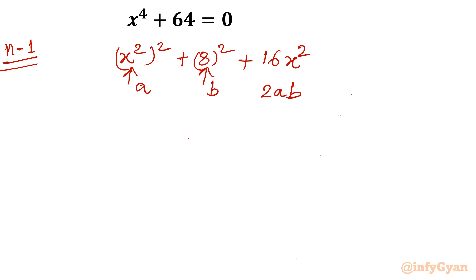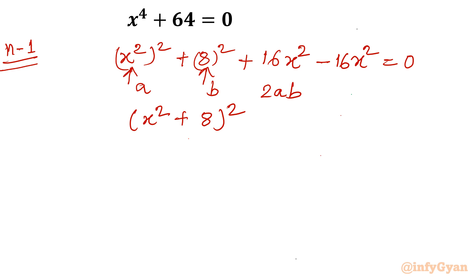Because I have added this term, I have to take it away also so the equation does not change. From the first three terms, I will write a-squared plus b-squared plus 2ab, which is (a + b) whole squared. So I will write (x-squared + 8) whole squared, minus 16x-squared equal to zero.